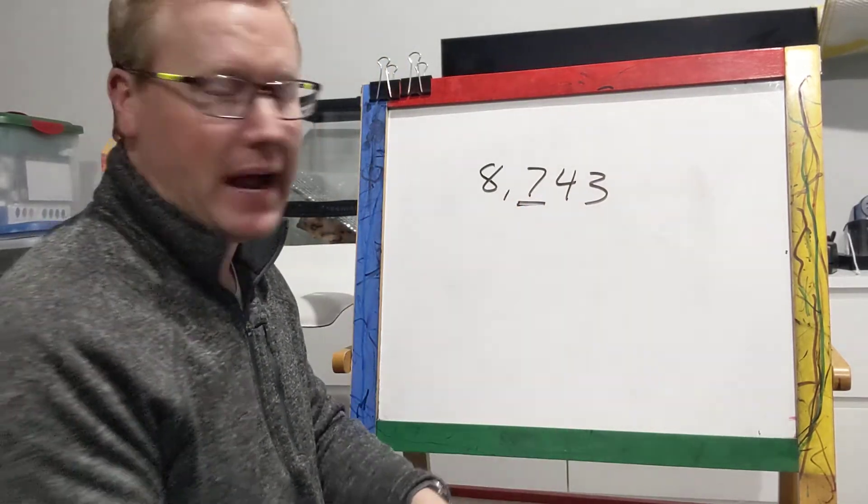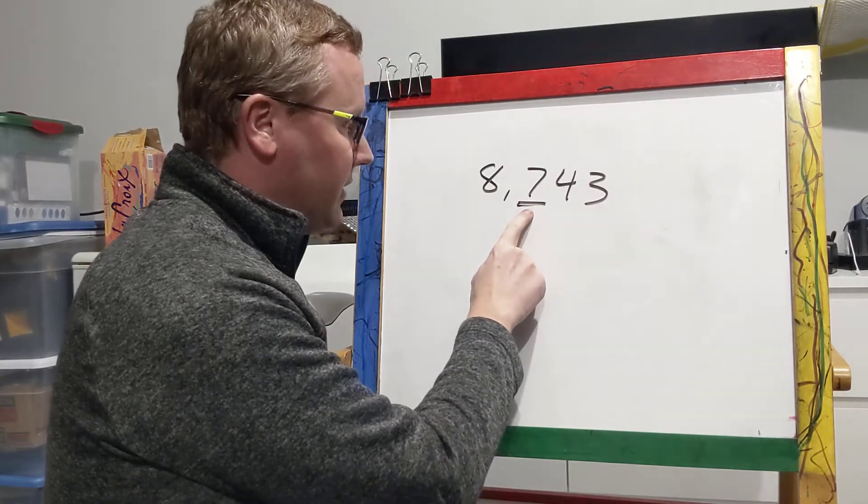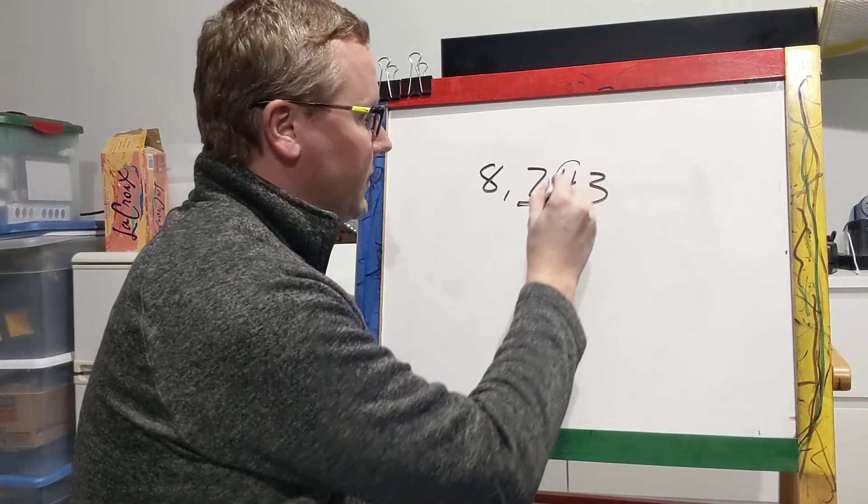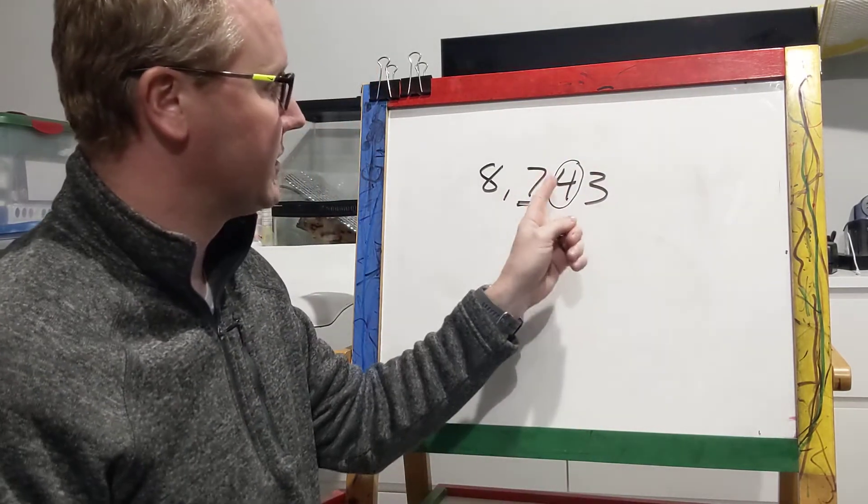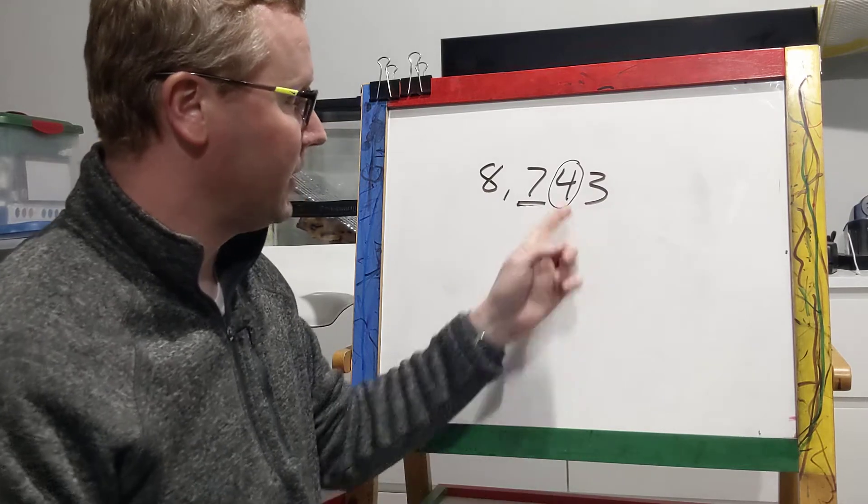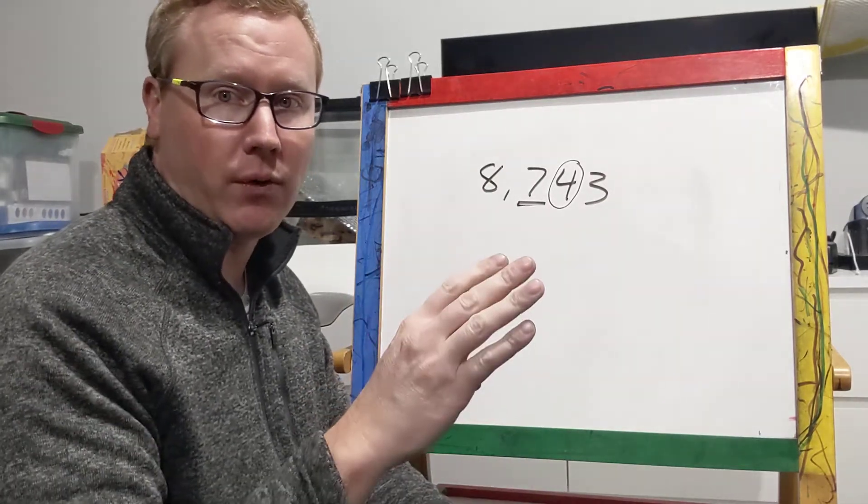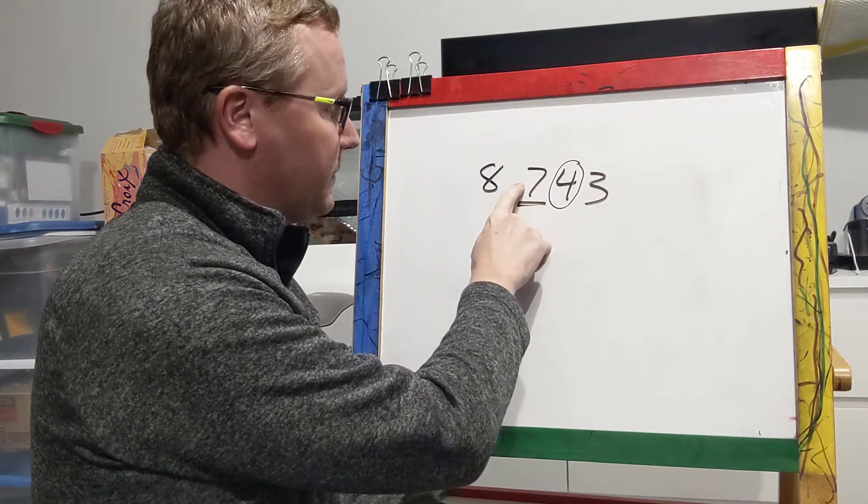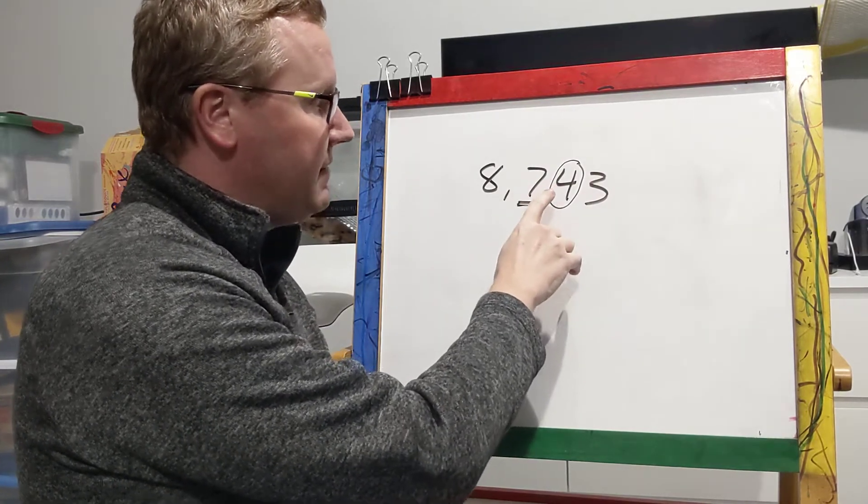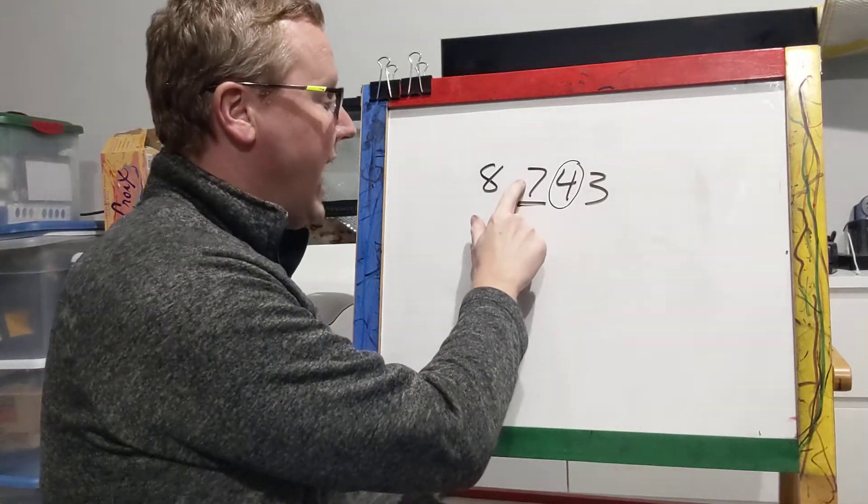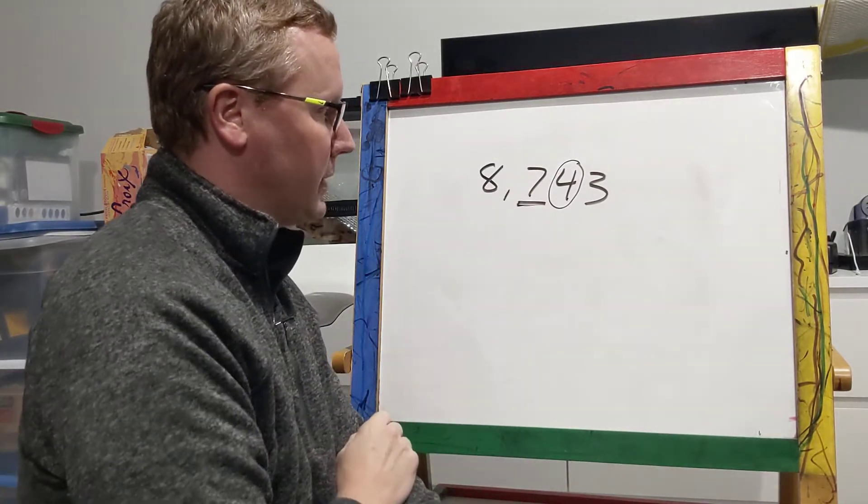So that is the digit we're going to be rounding. Remember when we're rounding, we look at the digit we're rounding to, and then we go to the right and circle that number. Because this number is going to tell us what to do. And the number if it's zero through four, we're going to keep this number the same.